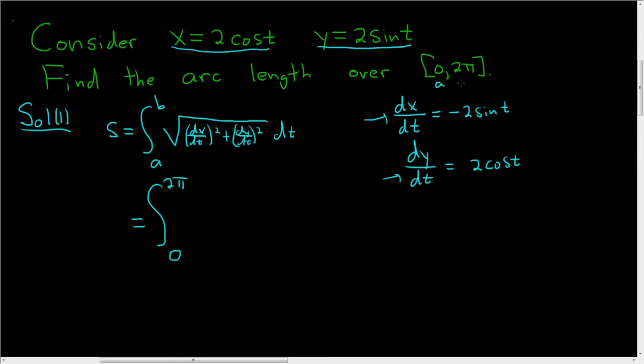Right, this is our a and this is our b. And we have dx/dt squared, so (−2 sin t)² plus dy/dt squared, so (2 cos t)². And all of this is a giant square root dt.